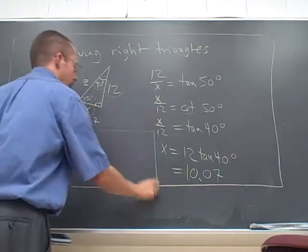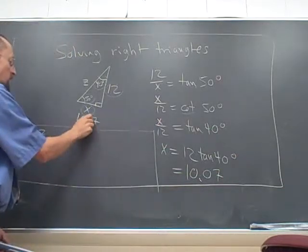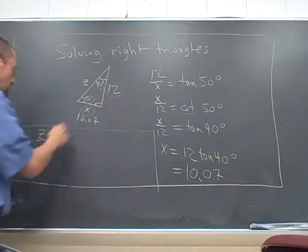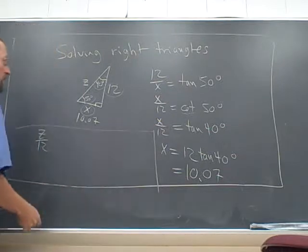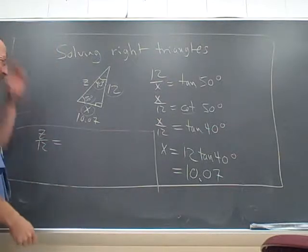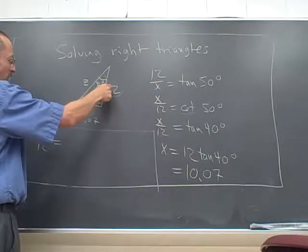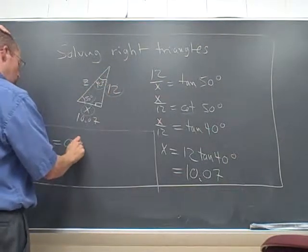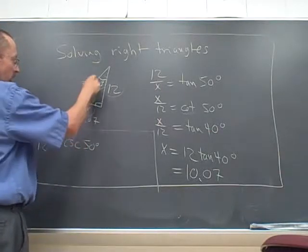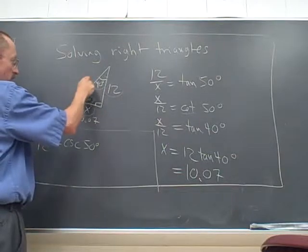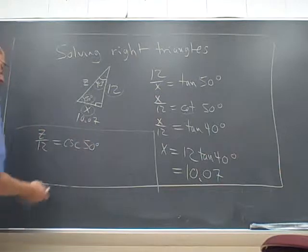Then z. I could compare it to x now, since that's known, but 12 is a prettier number. So let's see, z over 12, that'd be nice. But hypotenuse over opposite, that's 1 over the sine. That's cosecant of 50. I could use 40, and this would be the adjacent. That's one of the many ways to do it.